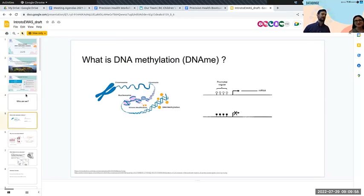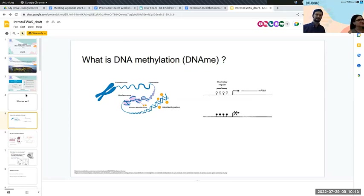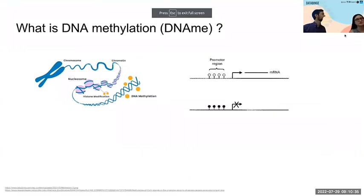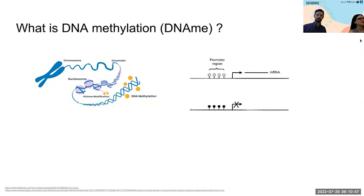Amy is probably the expert on DNA methylation out of the two of us. DNA methylation is a covalent addition to the DNA strand that interacts with how genes are expressed, and it's not always a clear-cut relationship. People often say that methylation in the promoter region is associated with decreased expression — that is often true, but not always. It's a complicated relationship, and that's kind of why we're interested in studying it.